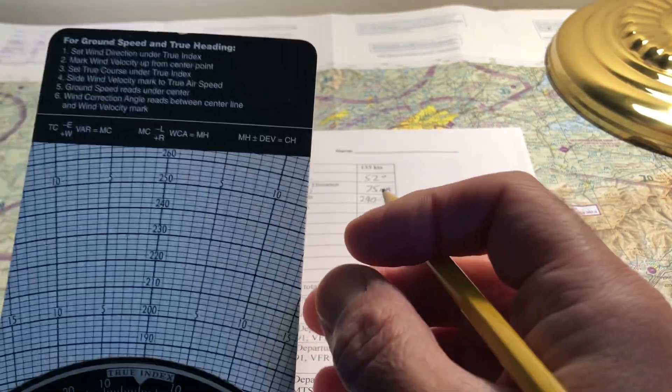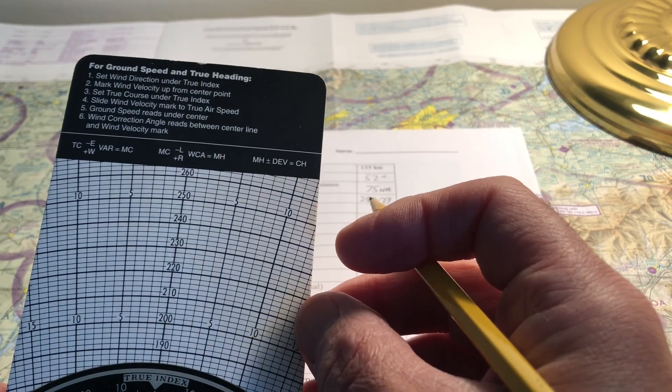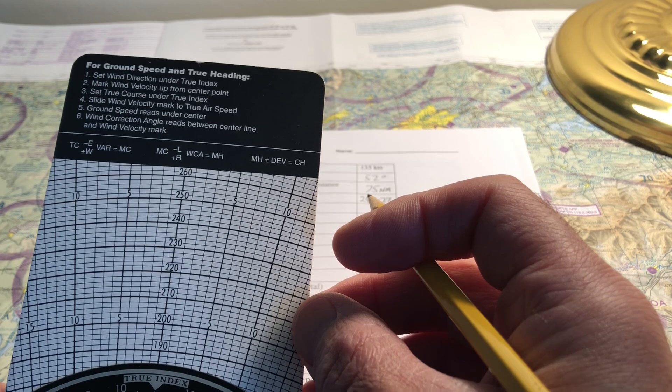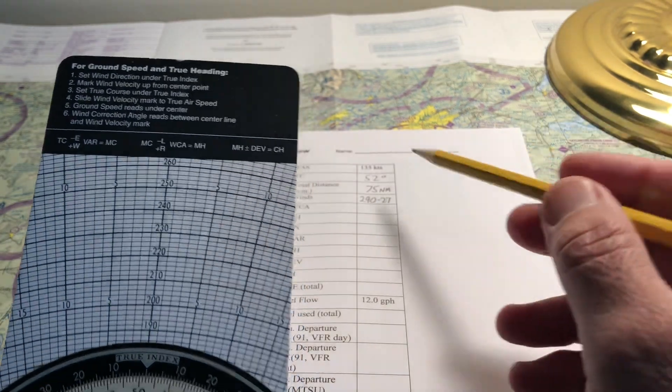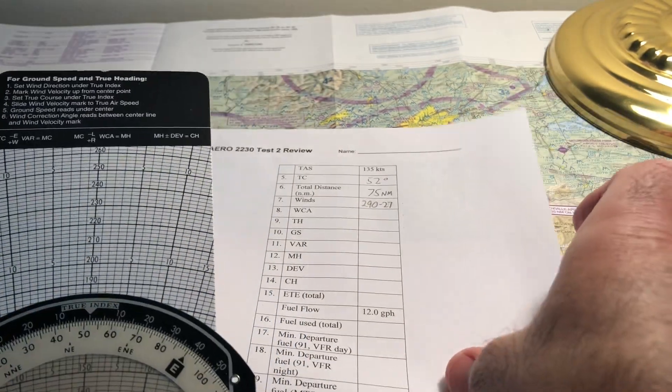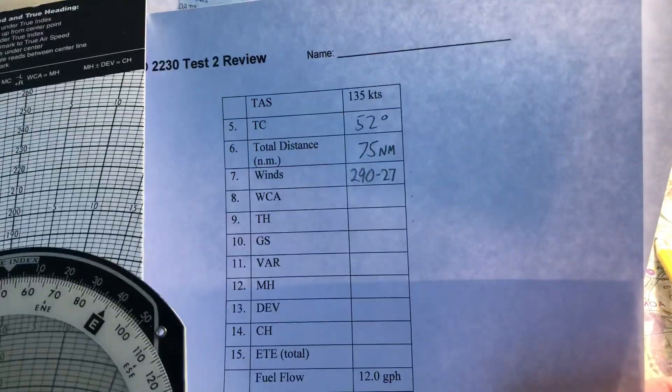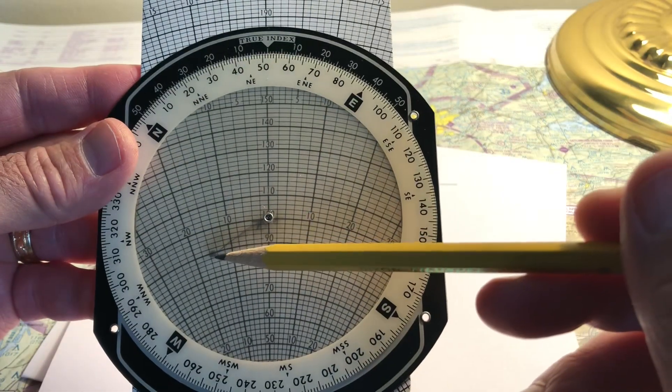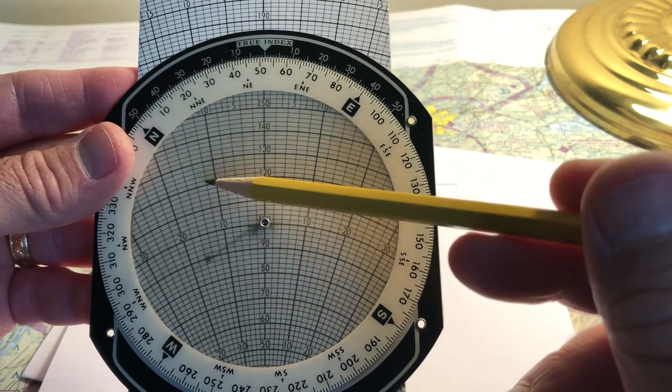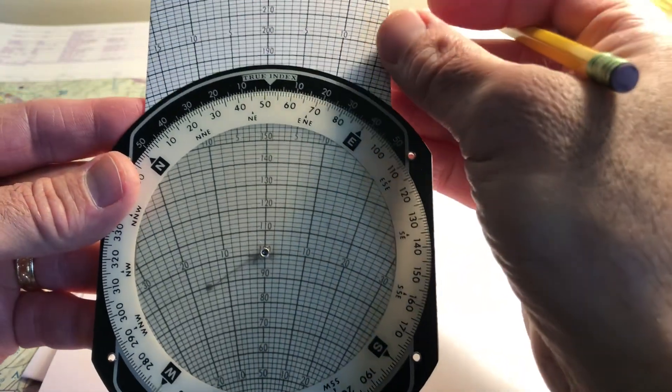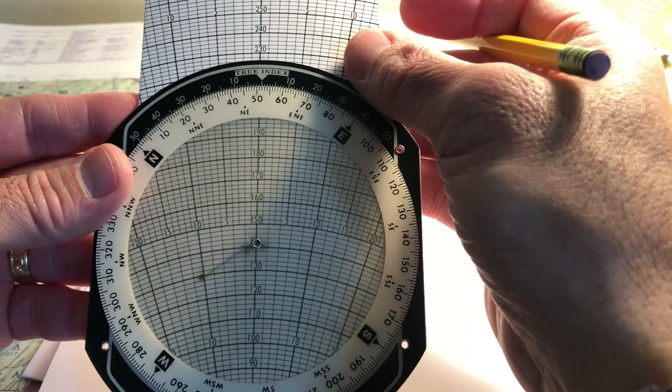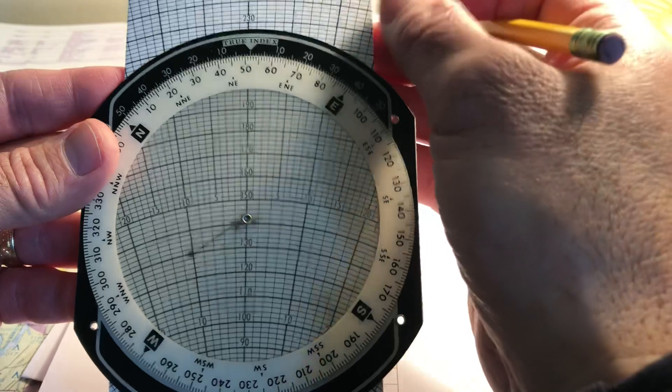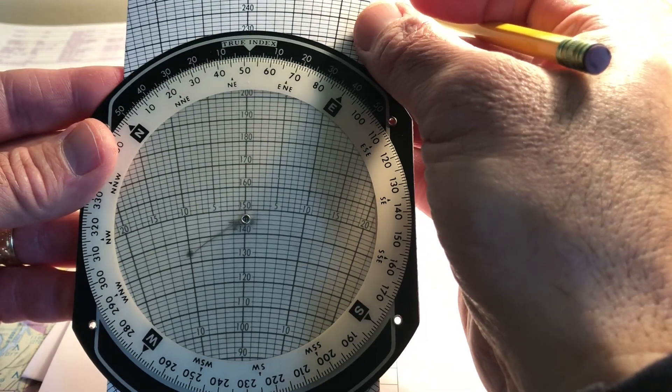And then number four, slide the wind velocity mark to the true airspeed. Well, the true airspeed was given to us. It's 135 knots. So I'm going to slide the wind velocity mark, not the center, but the wind velocity mark up to the 135 knot arc. So there's 130 and there's 140. So about halfway between, it's 135.